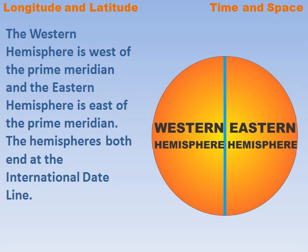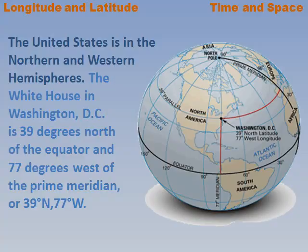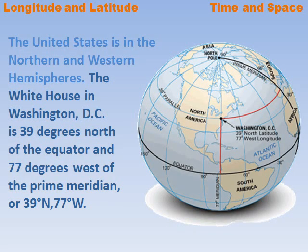The hemispheres both end at the International Dateline. The United States is in the Northern and Western Hemispheres. The White House in Washington, D.C. is 39 degrees north of the equator and 77 degrees west of the Prime Meridian, or 39 degrees north, 77 degrees west.